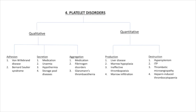Platelets are produced in the bone marrow and destroyed in the reticular endothelial system after circulating for about nine days. Platelets are important for maintaining the integrity of the vascular system and for achieving primary hemostasis. Critical manifestations of platelet disorders include easy bruising, excessive bleeding, and petechial or purpuric rash. Bleeding time and modern platelet analyzers may be helpful in identifying platelet disorders.